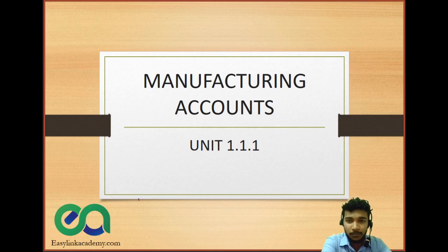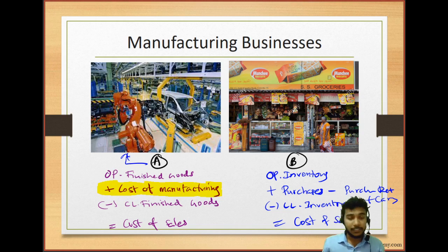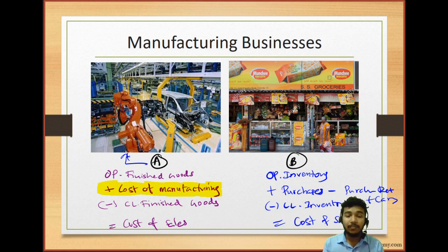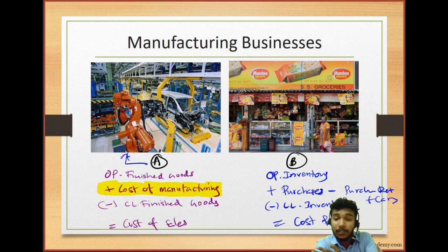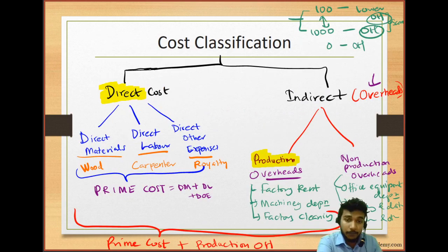We learned there is a main difference between a normal ordinary buying and selling business and a manufacturing business. We looked at Toyota for example and compared it with SS Groceries located in Colombo 15. The way we calculate cost of sales was very different — for SS Groceries we take purchases, while for Toyota we take the cost of manufacturing. We looked at the format and learned the reasons why we prepare manufacturing accounts and the cost classification methods.